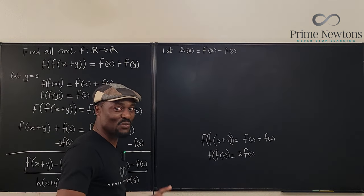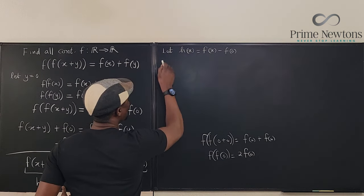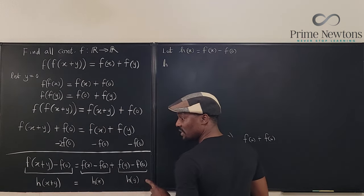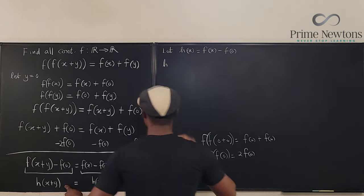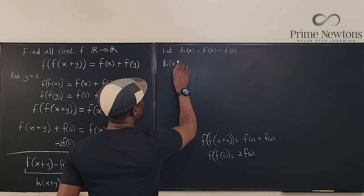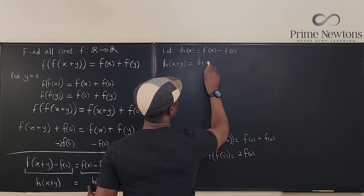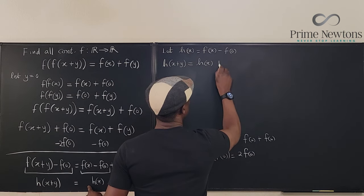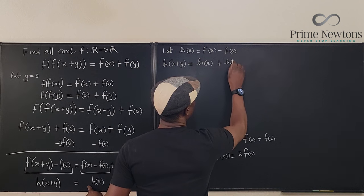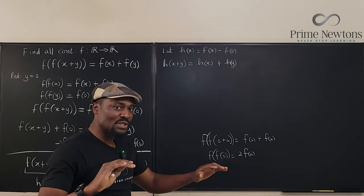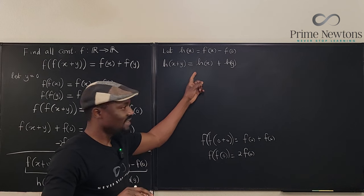How do I know? Just one second. Just watch me. So h, actually, I should have written this before writing this, but I wanted you to see it. So I can say, h of x plus y is equal to h of x plus h of y. If you remember at the beginning, I talked about the Cauchy functional equation, that is it. This is a Cauchy functional equation.